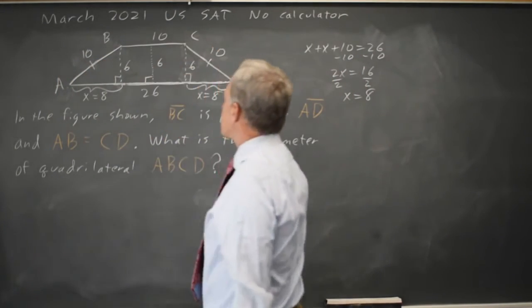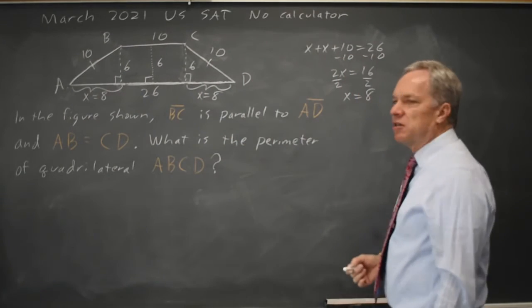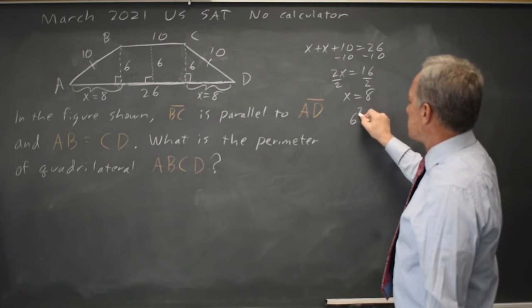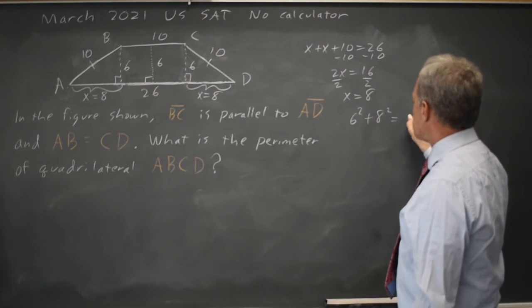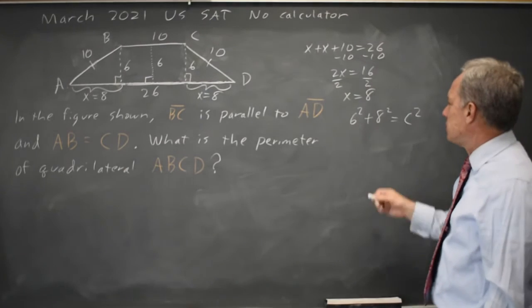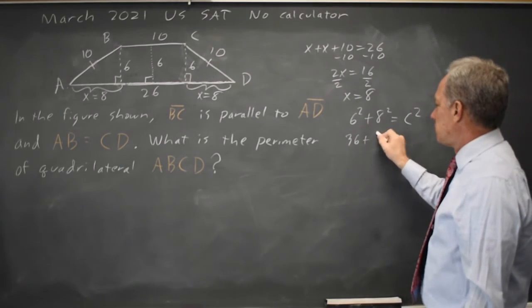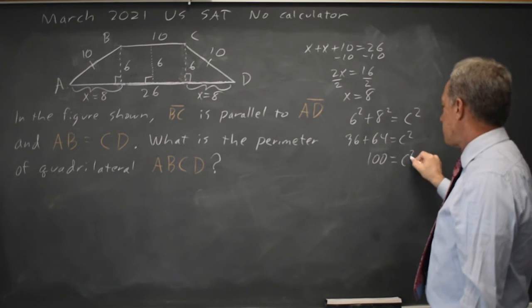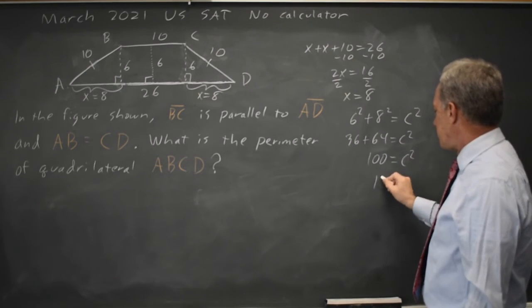Or I can use the Pythagorean Theorem, which is in our formula sheet at the start of each math section, and it says 6 squared plus 8 squared equals C squared. Actually, it says A squared plus B squared equals C squared, but close enough. So that's 36 plus 64 equals C squared, 100 equals C squared, C equals the square root of 100, which is 10.